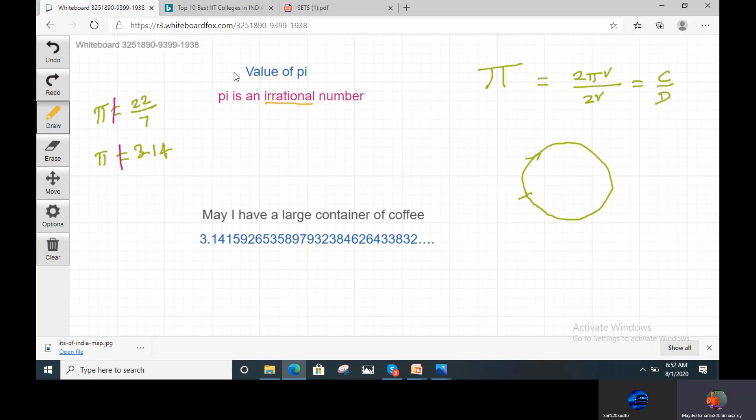So if you want to find the value of Pi, first you have to state that 22 by 7 is not accurate value. Approximately, 22 by 7 is an approximate value and 3.14 also an approximate value. So we can't use this value when you go for a big circle. This is a small circle. For small circle we can use Pi value as 22 by 7 or 3.14.